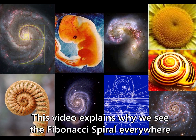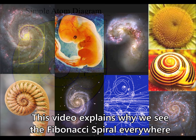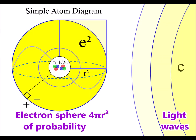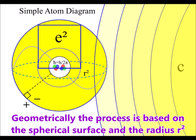The universe forms the golden ratio out of simple spherical geometry. We have an electron sphere around the nucleus of each atom. When there is the absorption and emission of light, the radius is squared because the process is unfolding relative to the spherical surface.